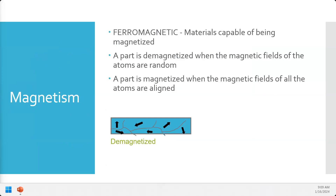Normally, if a part is not magnetized, those fields are all pointing in different directions — they're randomly scattered. With random probability, for every one where the north pole is on the right, there's another where the south pole is on the right, and they cancel each other out. So when you have a bunch of random magnetic fields, the part itself doesn't have an overall magnetic field.